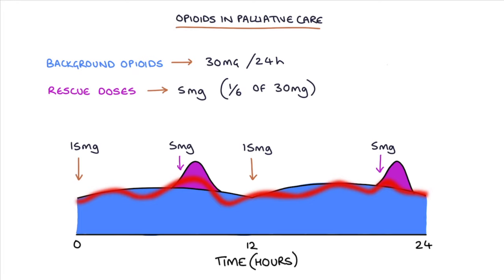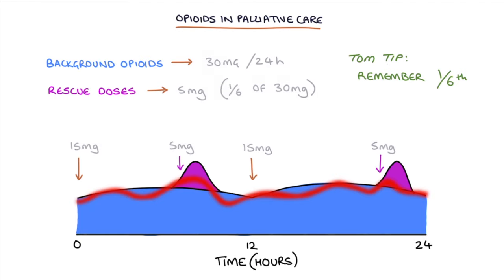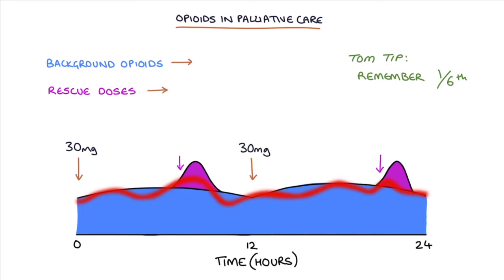If the patient requires regular rescue doses for breakthrough pain, the dose of the background opioid can be increased. The rescue doses will also need increasing so that they remain one-sixth of the background 24-hour dose. Remember that each rescue dose is one-sixth of the 24-hour background dose — this is a very common exam question. For example, if a patient is on 30mg of modified release morphine every 12 hours, the correct breakthrough dose would be 10mg, as the patient is getting 60mg background morphine every 24 hours.